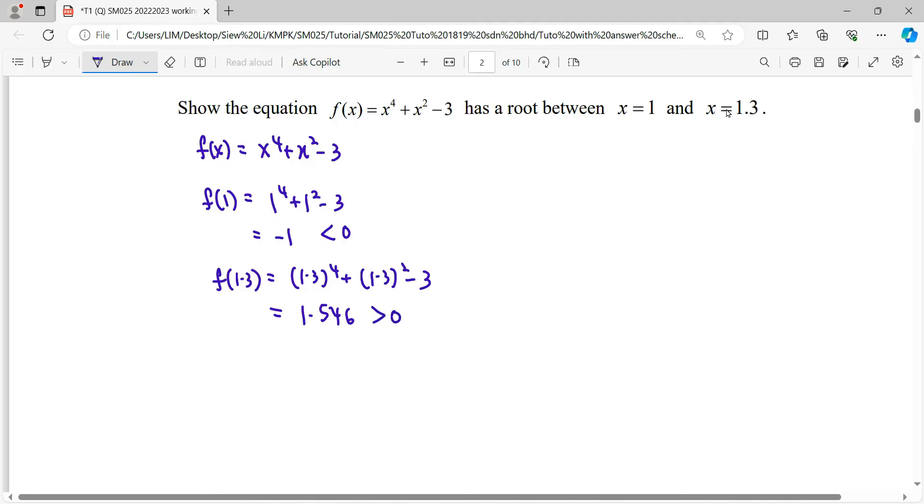So by the Intermediate Value Theorem, we write out the conclusion: since f(1) and f(1.3) have opposite signs,